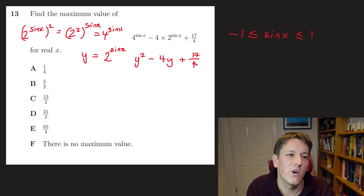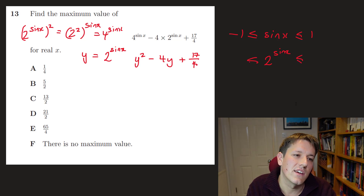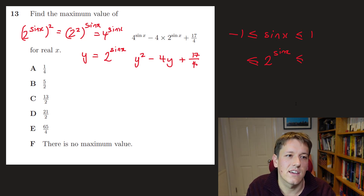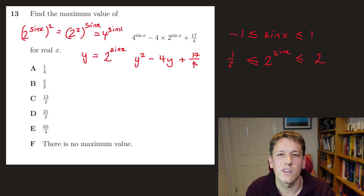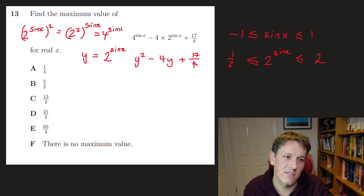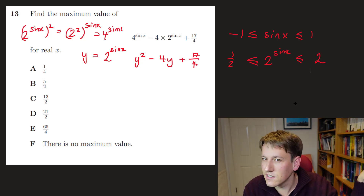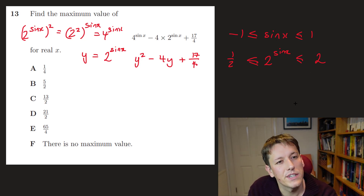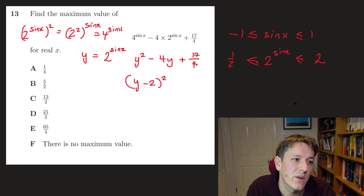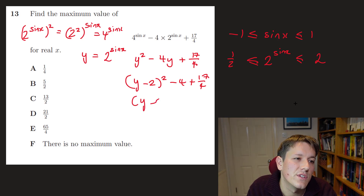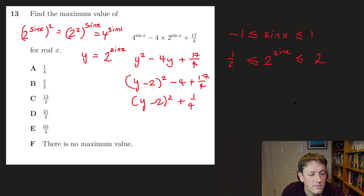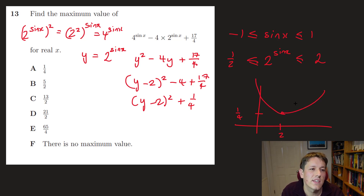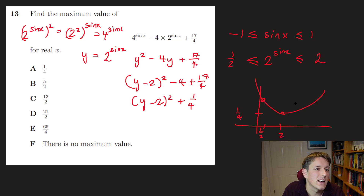You might think there's no maximum since the quadratic has no maximum, but the domain is restricted because y = 2^(sinx) and sin x only goes between −1 and 1. Since 2^x is strictly increasing, y is restricted to [2^(−1), 2^1] = [1/2, 2]. So we're looking at this quadratic only for y between 1/2 and 2. Completing the square gives (y − 2)² + 1/4, which has its minimum at y = 2. Over the interval [1/2, 2], the maximum occurs at y = 1/2.